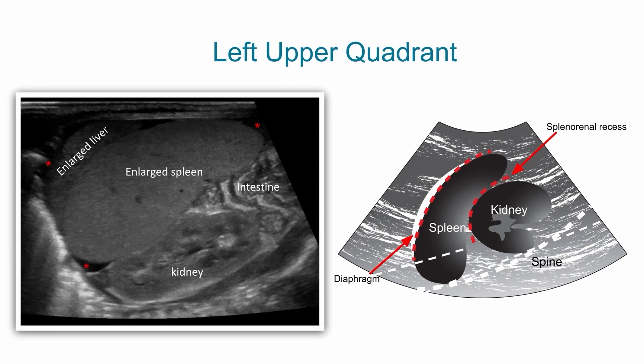In this image here, we see an abnormal left upper quadrant because we see ascites fluid marked by the red star. We see an enlarged spleen, the intestine, and the large liver.